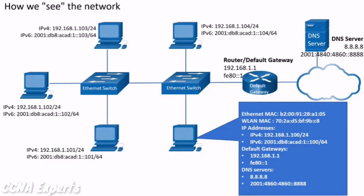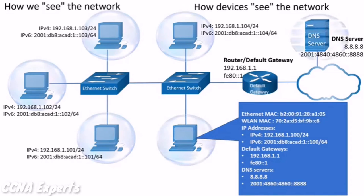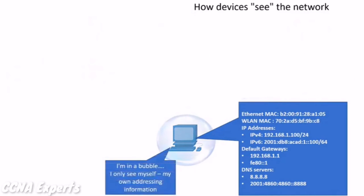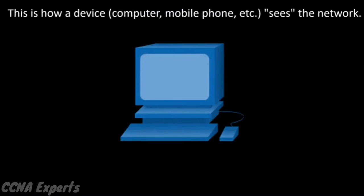This is how we see the network, but how do devices see the network? You can think of it as every device being in its own bubble. The only thing a device knows is its own addressing information. In other words, this is how a device sees the network — it doesn't.